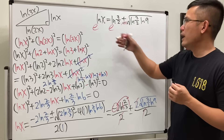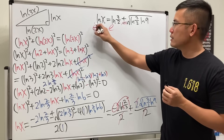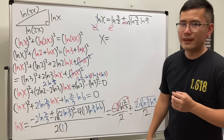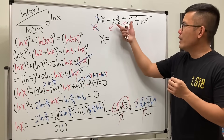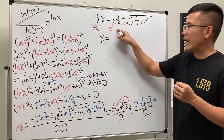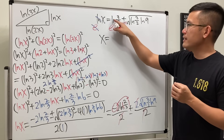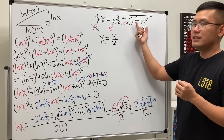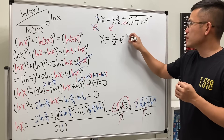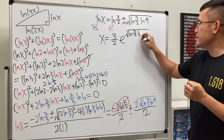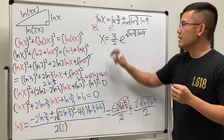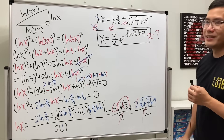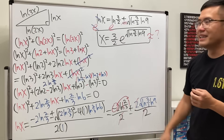Finally, exponentiating both sides: e^(ln(x)) = e^(ln(3/2) + √(ln(3/2)·ln(9))). The left side is just x. On the right, we separate: e^(ln(3/2)) · e^(√(ln(3/2)·ln(9))). The first factor simplifies to 3/2, giving x = (3/2)·e^(√(ln(3/2)·ln(9))). You can plug this into a calculator to get the numerical value!